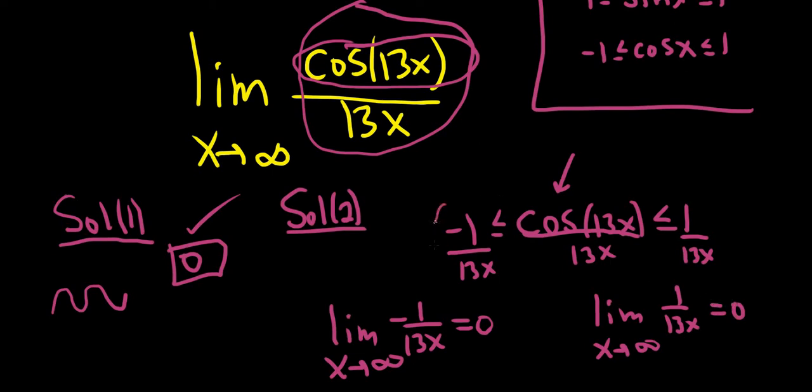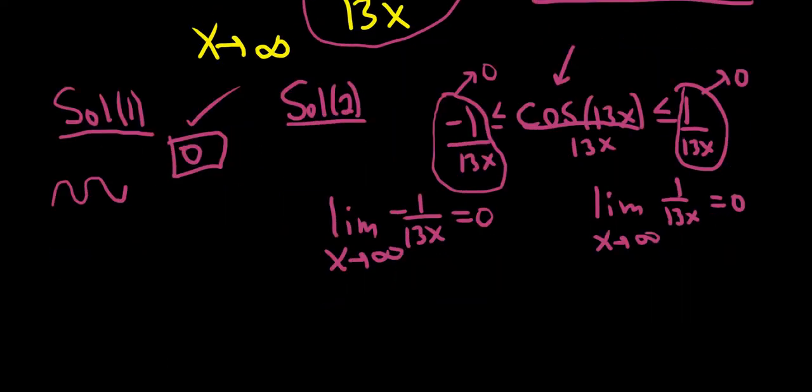So basically, you have this inequality. You have that this piece here on the left approaches 0. You have that this piece here on the right approaches 0. So the squeeze theorem says that whenever you have this happening, whatever is trapped in the middle also approaches 0.